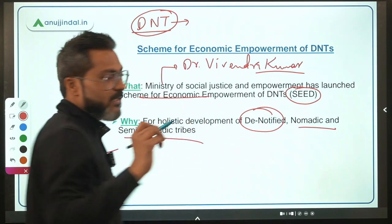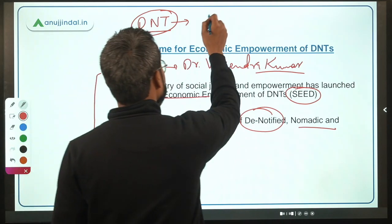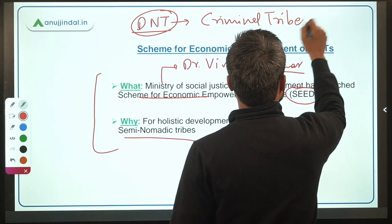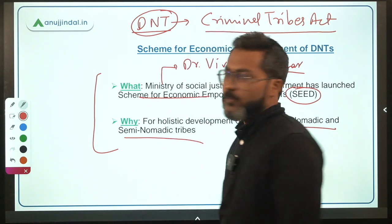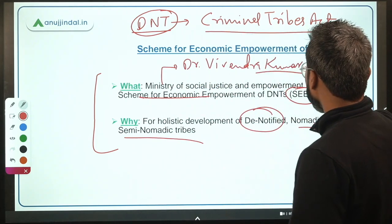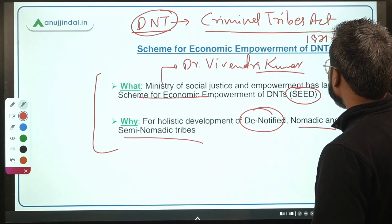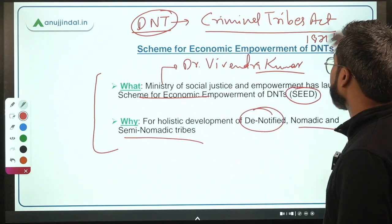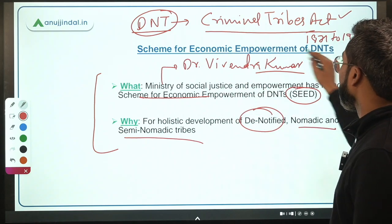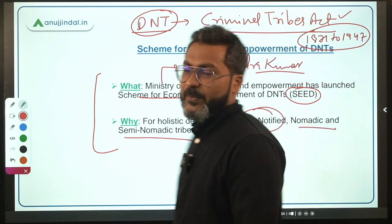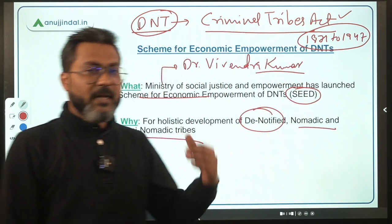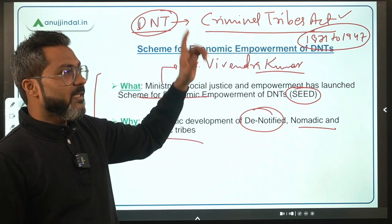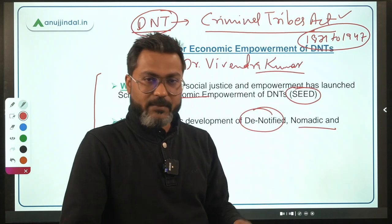De-notified tribes are tribes which were once notified under the Criminal Tribes Act, enforced by the British Raj during the period 1871 to 1947. After independence, the Government of India repealed this act, and since then these tribes are known as De-notified Tribes.